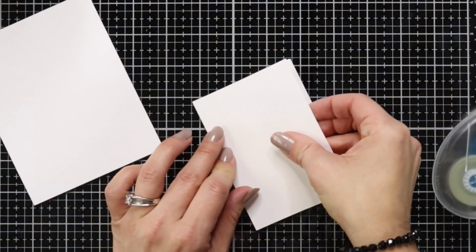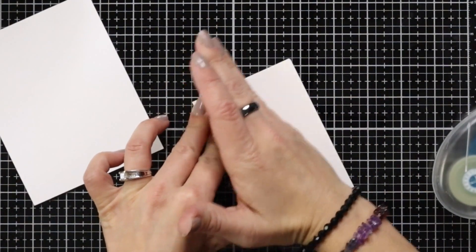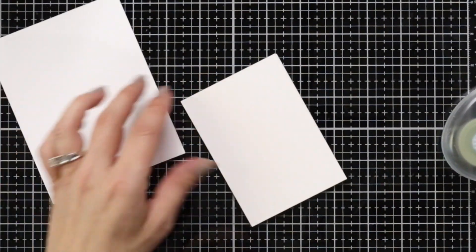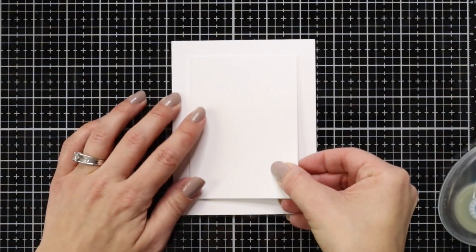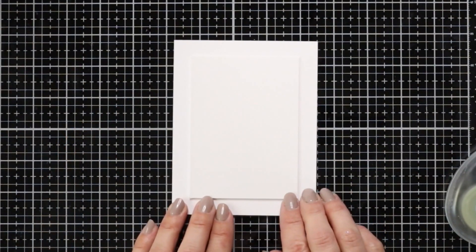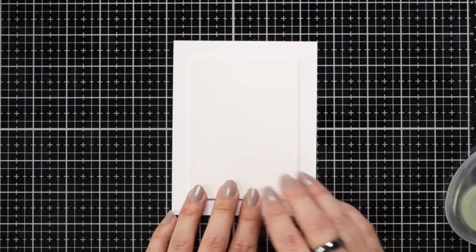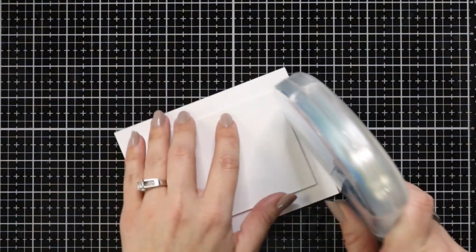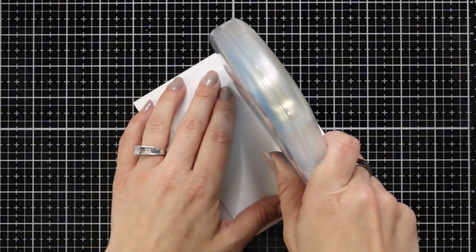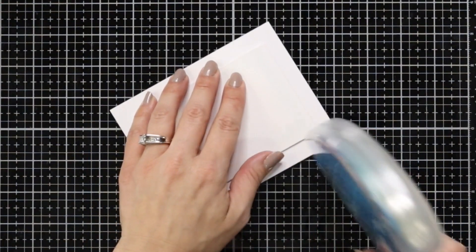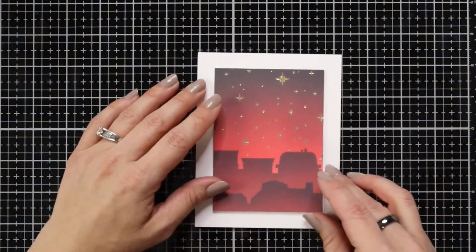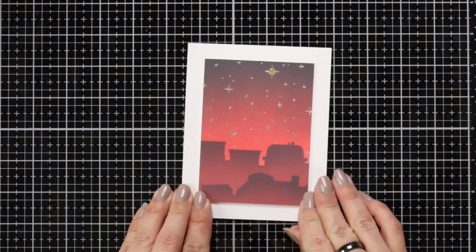Now I did trim my ink blended panel down a little bit which I trimmed it down to three and a half by four and three quarters. So what I'm doing is I took four pieces of cardstock trimmed to that same size and layered them together with my large tape runner. That's going to add dimension behind my panel and then I attached it to a piece of white cardstock measuring four and a quarter by five and a half. Now I added that tape runner to the top of that and then I can attach my blended background once it was dry.